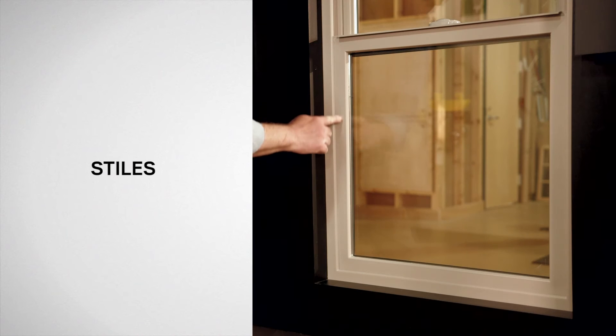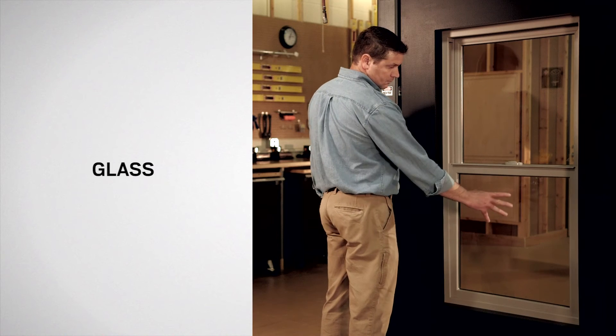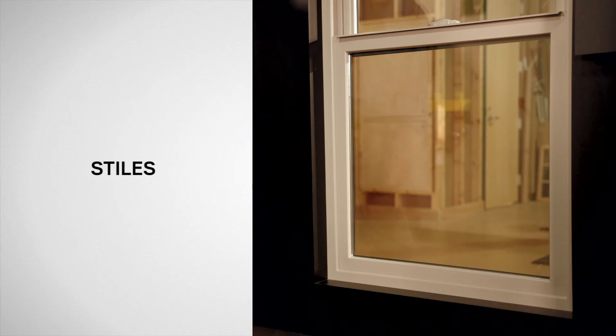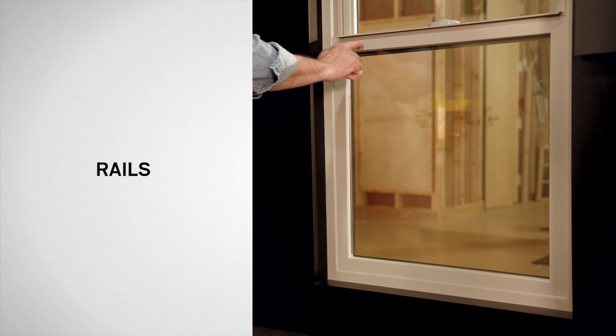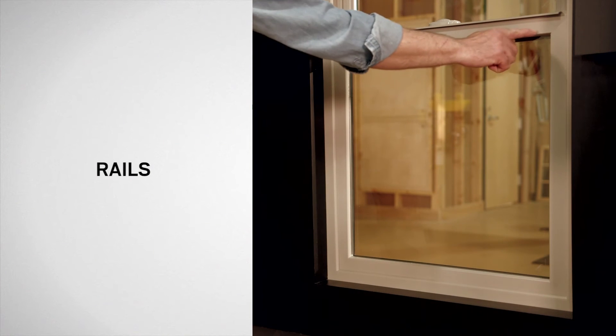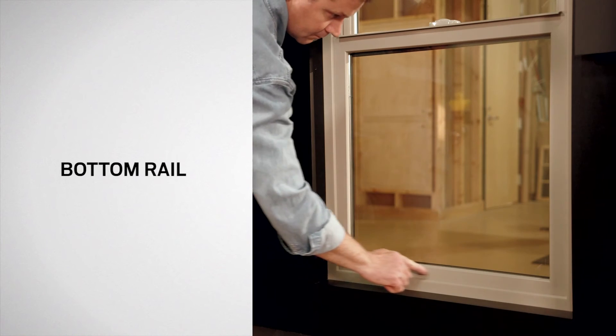Each sash consists of styles, rails, and glass. Styles are the vertical members. Rails are the horizontal members. Here you can see the top rail and the bottom rail.